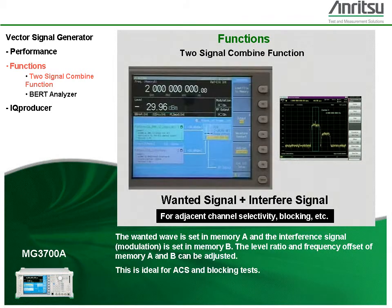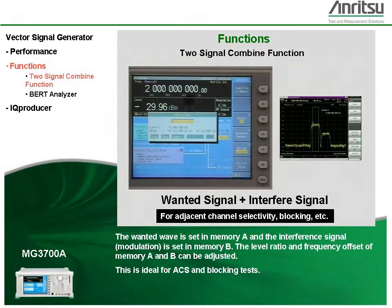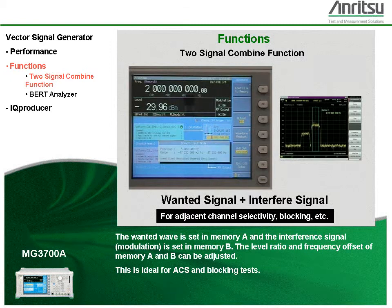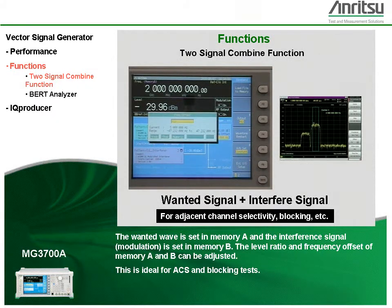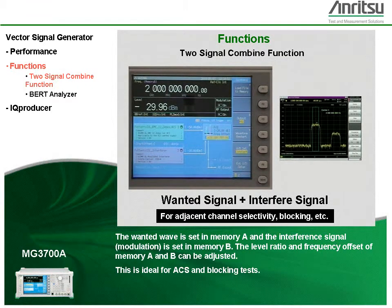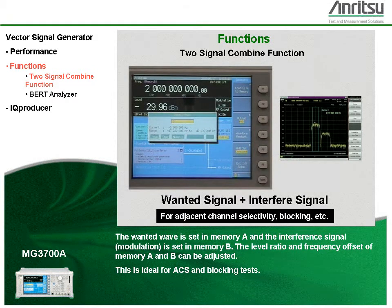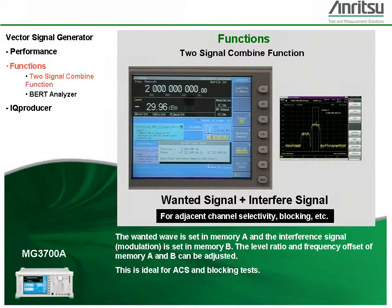The desired wave is set in memory A, and the interference signal with modulation is set in memory B. The level ratio and frequency offset of memory A and B can be adjusted. This is ideal for ACS and blocking tests.